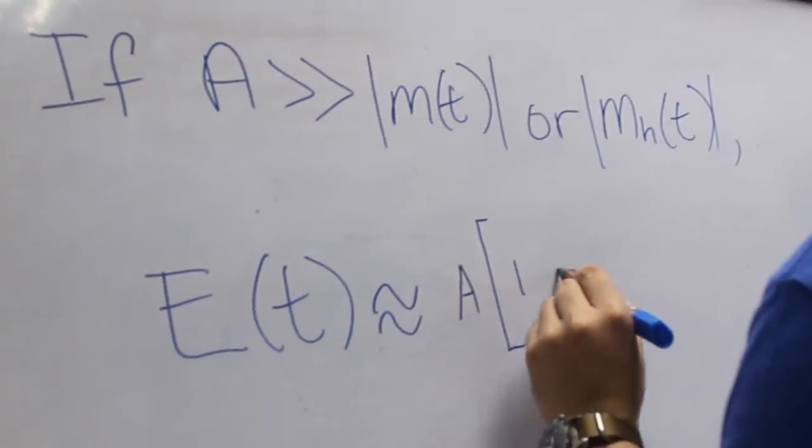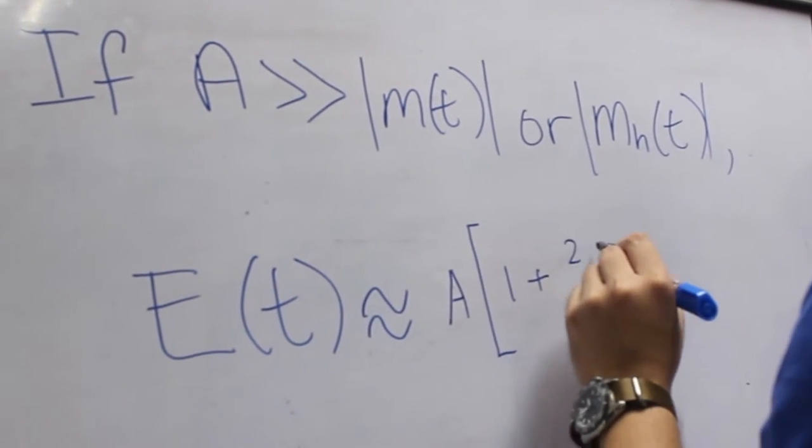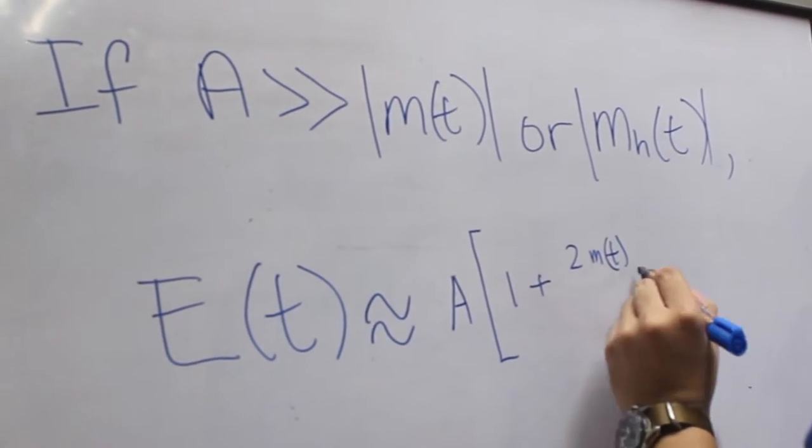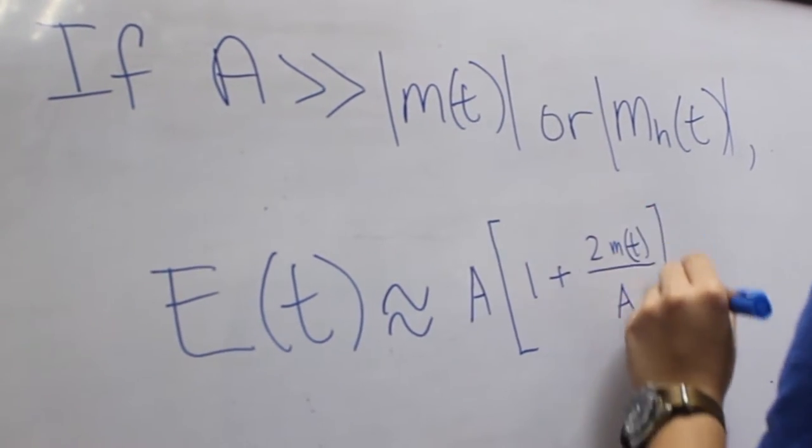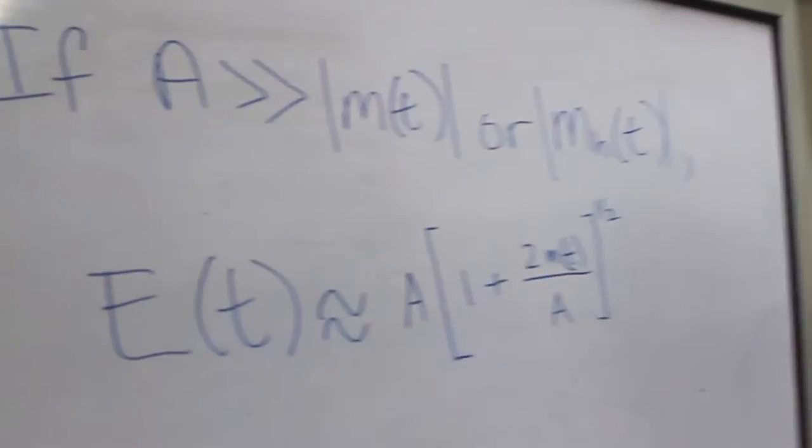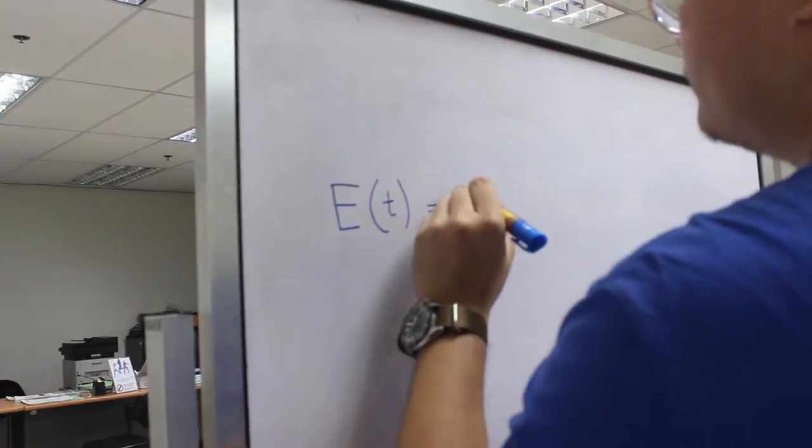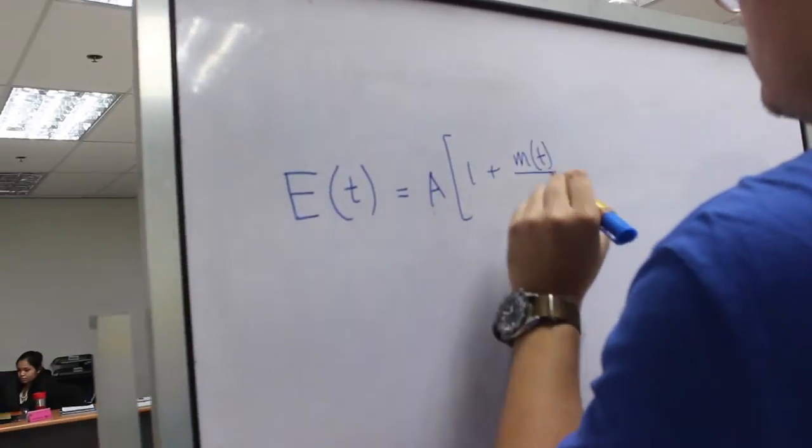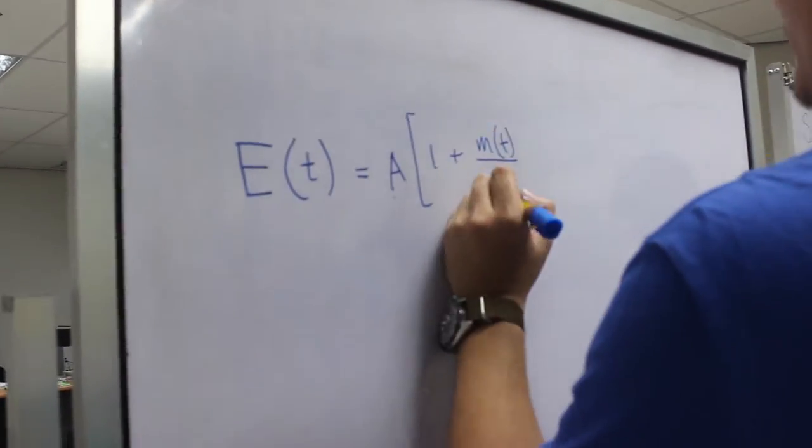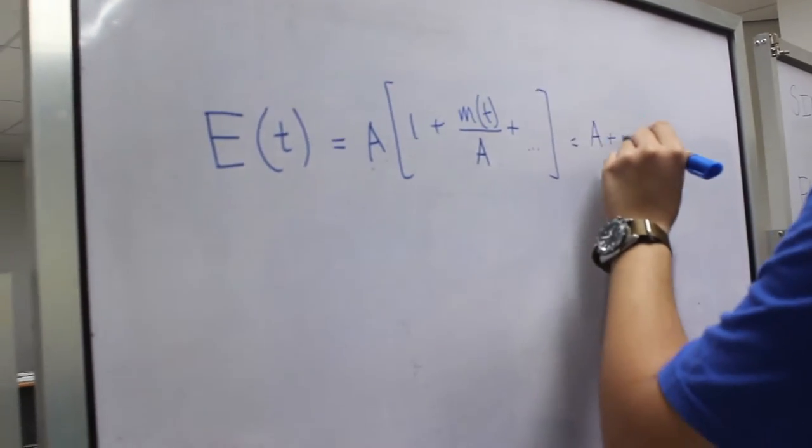If the amplitude of the carrier is greater than the amplitude of either the modulating signal or its Hilbert Transform, the envelope can be approximated as follows. Using a series expansion and discarding higher order terms due to m over A less than 1, we obtain the approximation.